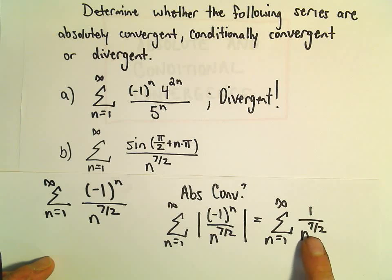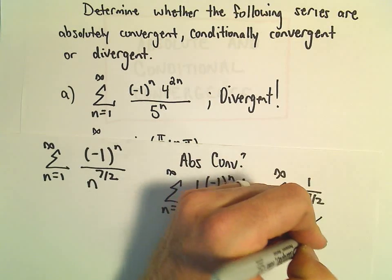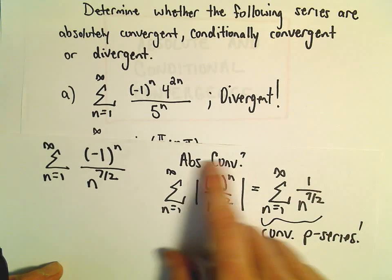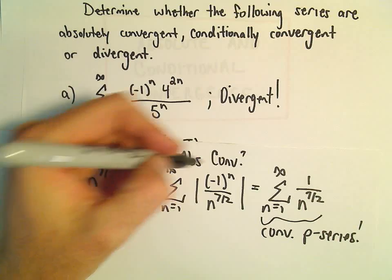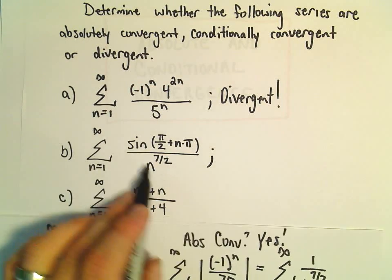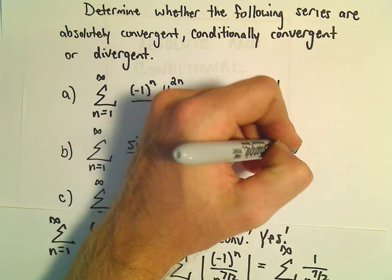But this is now a p-series, and since our p is greater than 1, this is a convergent p-series. So since it's convergent, we would say, yes, in fact, it is absolutely convergent. So our second series, this alternating series, would be an example of an absolutely convergent series.